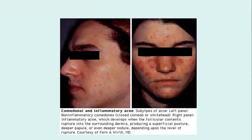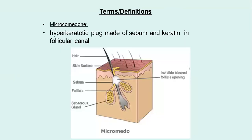This is a picture of comedonal acne — you can see the comedones — and you can see the inflammatory or papulopustular acne. Picture of the hyperkeratotic plug, the micro-comedone — we do not know that something is happening under our skin at this moment.